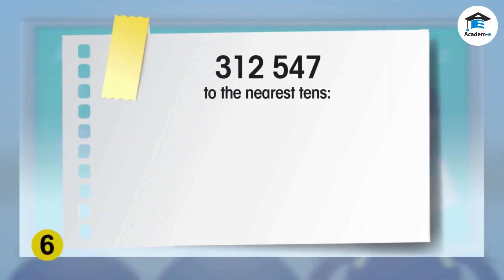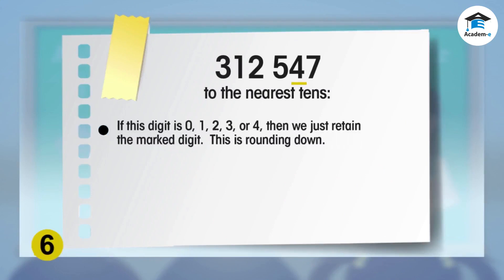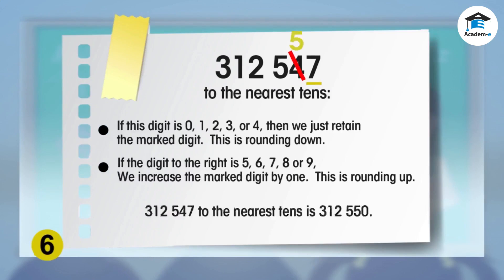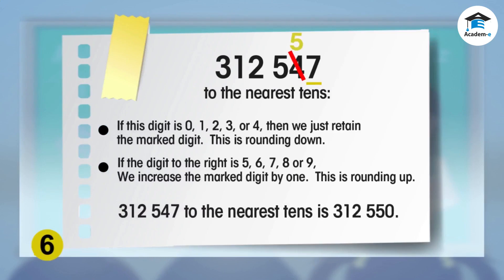To round this off to the nearest tens, mark the 4. Then look at the digit to the right — it is a 7. Therefore we need to round up.